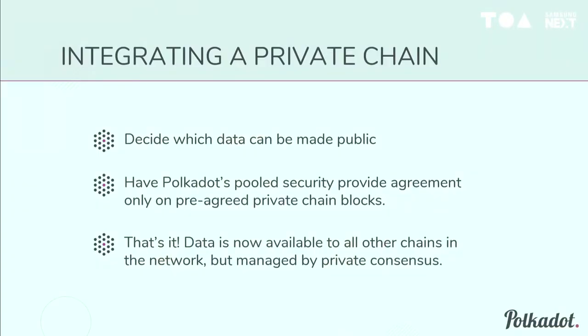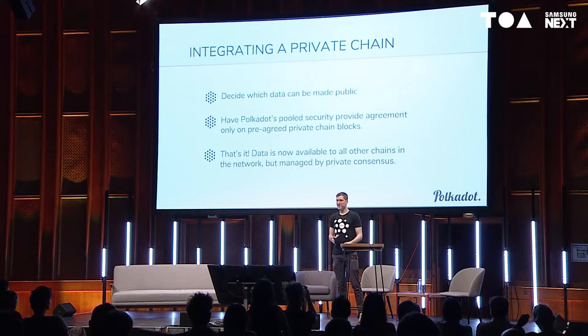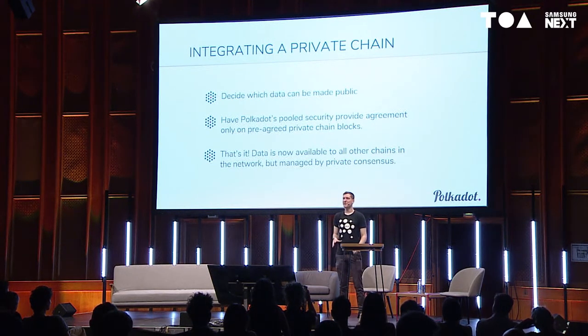As an example of integrating a private chain: it's basically integrating a parachain into the network that uses its own consensus algorithm — what has been signed off on by the private authority. Polkadot's pooled security checks that everything included has been signed off by the private network authorities, but it can't produce blocks signed by those authorities. The private network can determine exactly which data it makes available — perhaps only a manifest of what changes or data exists — and that data would then be available to all other chains in the Polkadot network, while remaining completely managed by the private chain authorities.